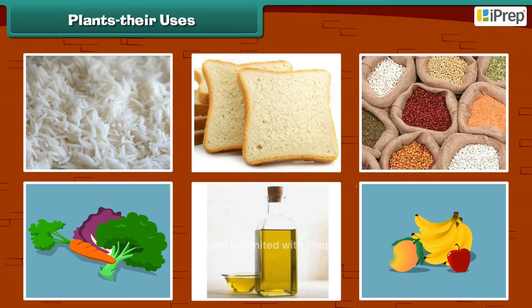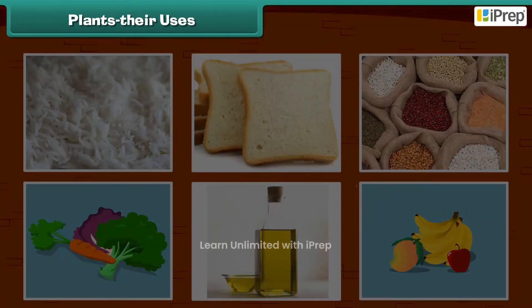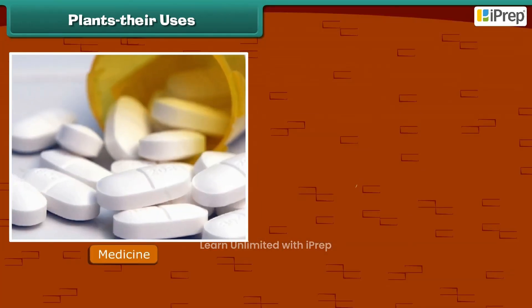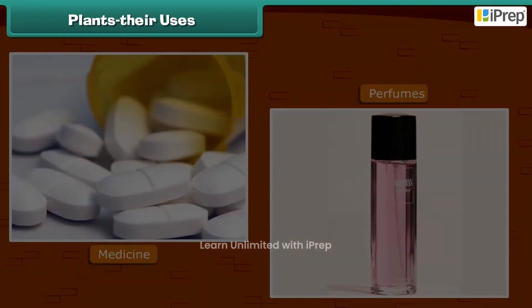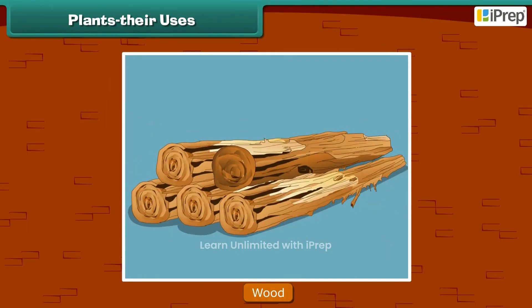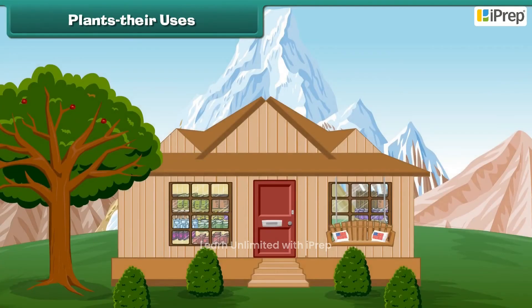As we know, we get our food items from plants. Besides food, we also get many other things — many medicines and perfumes are made from plants. Plants also give us wood, and in some places houses are made of wood.